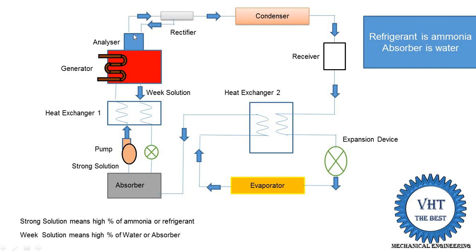To avoid choking of the refrigerant flow in the expansion valve, we provide two components: the analyzer and the rectifier. The analyzer contains different trays of water, so the water vapor is separated inside the analyzer and the water particles return back to the generator. The rectifier further performs the same function — it also separates the remaining water vapor particles not separated in the analyzer, and this water is again supplied back to the generator.